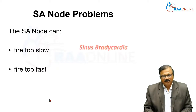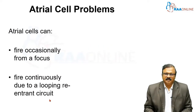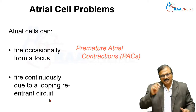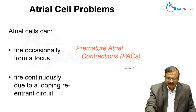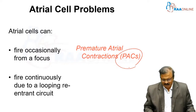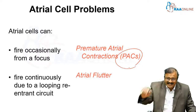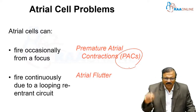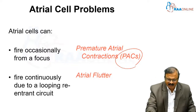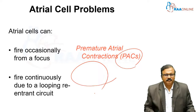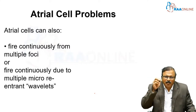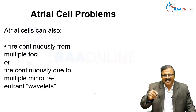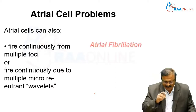SA node arrhythmias include bradycardia and tachycardia. Atrial cells — if firing occasionally from a focus, that is premature atrial contractions. A re-entrant circuit continuously firing is atrial flutter. Multiple foci or multiple micro re-entrant wavelengths — that is atrial fibrillation.